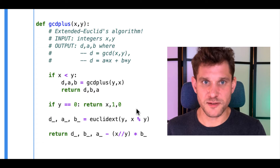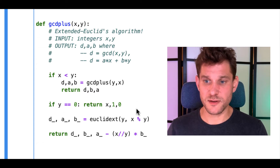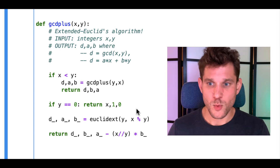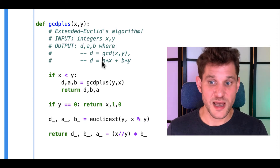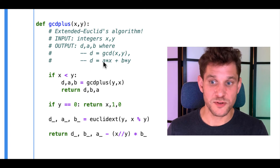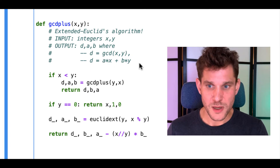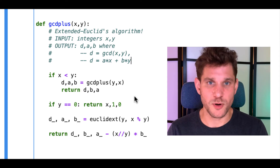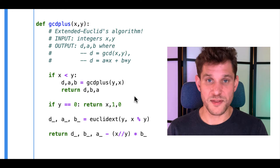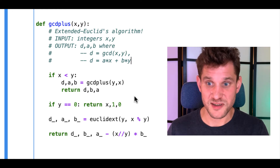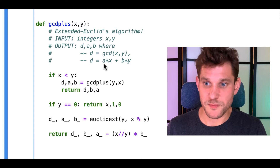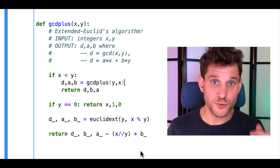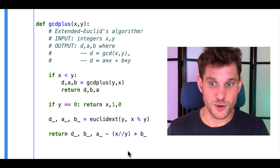We also talked about the Extended Euclid algorithm. This also computes the GCD of x and y, but it gives you a little bit extra. What it does is it finds integers A and B such that the GCD actually equals A*x plus B*y. We didn't go into all the details for why this algorithm works, but if you want to see a proof, you can check the book. It's useful for computing the modular inverse, which we'll get to in a moment.